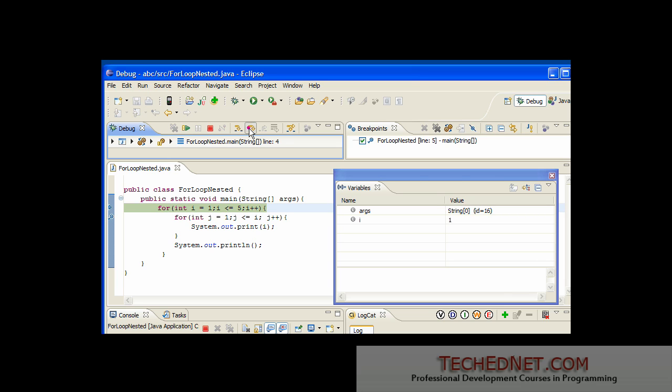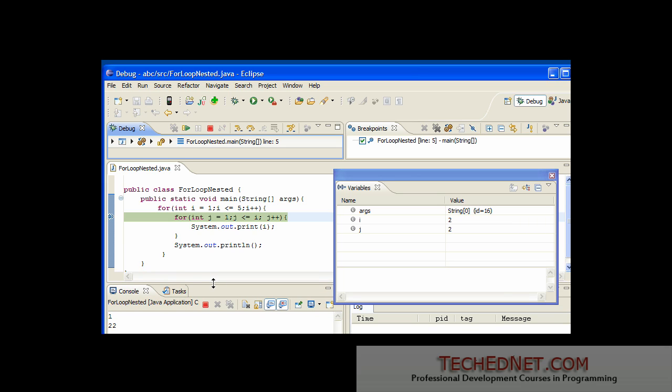Now, the value of i becomes 2. We enter the inner loop again. So in this case, j is going to go from 1 to 2. Right now, j is 1. If I continue on, j becomes 2. And if you watch the window at the bottom, it is going to be printing out those values. This is where the value of the output is being printed. Let's step through the code.